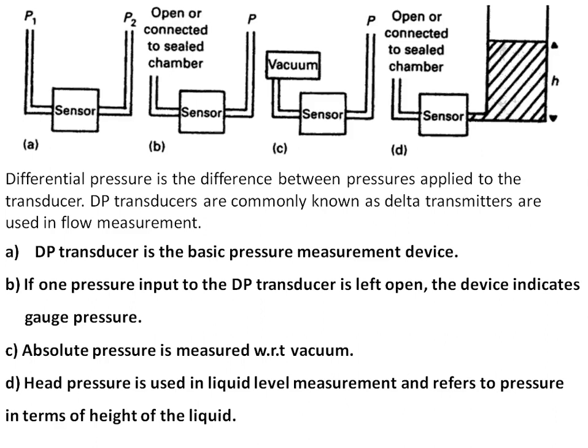Figure D represents head pressure, used for liquid level measurement. This refers to pressure in terms of the height of the liquid. The pressure generated by a liquid is proportional to rho × G × H, which is the density, gravitational constant, and the height of the liquid.